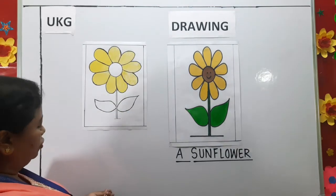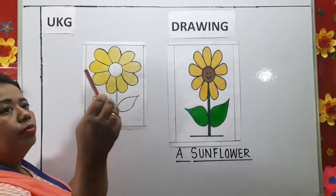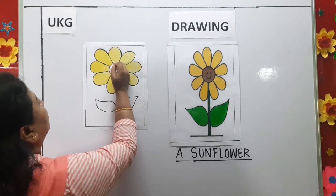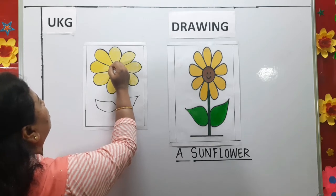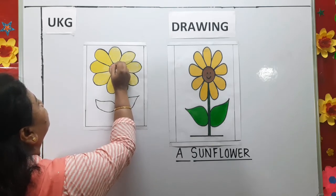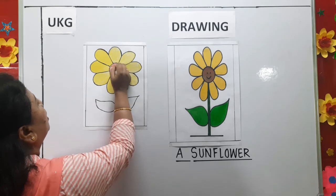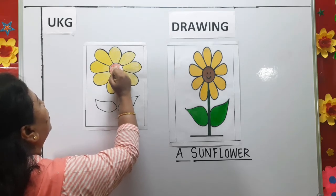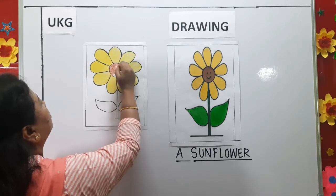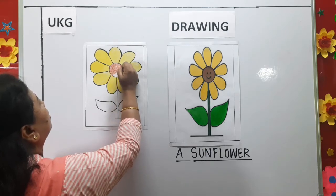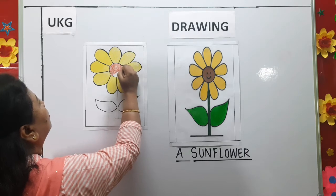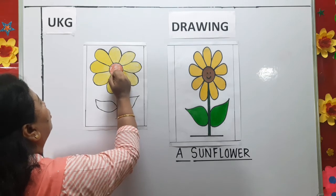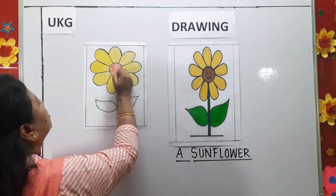Now I am going to use brown color for the circle. Here I am using brown color. Here also, color in same direction from left to right. And try to color inside the border line. And try not to leave any white spaces.